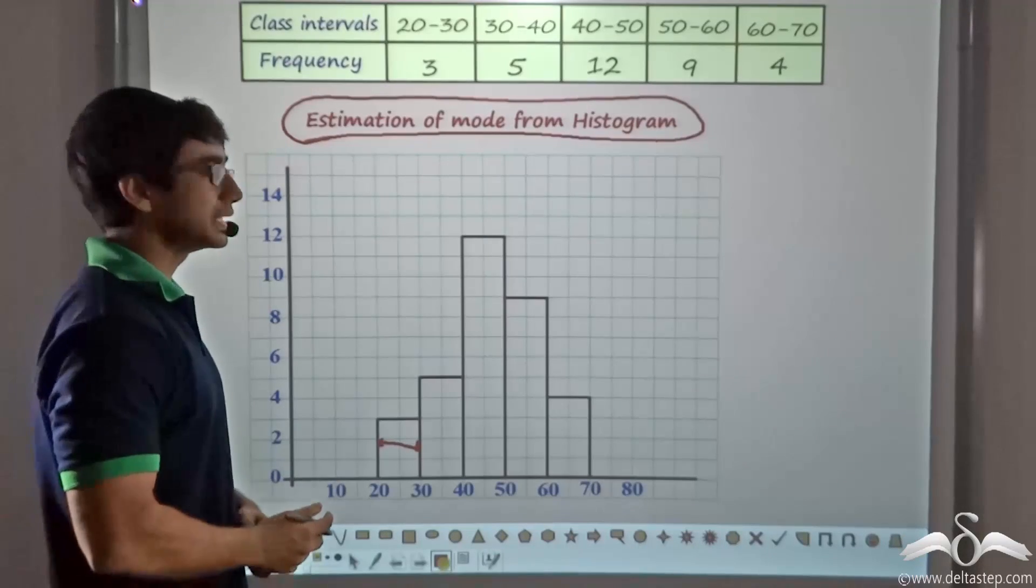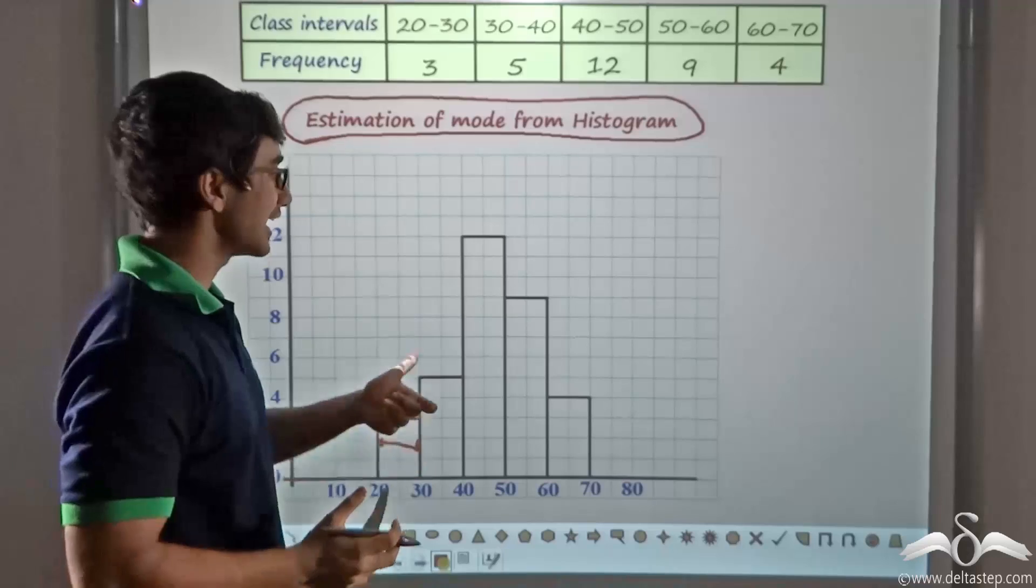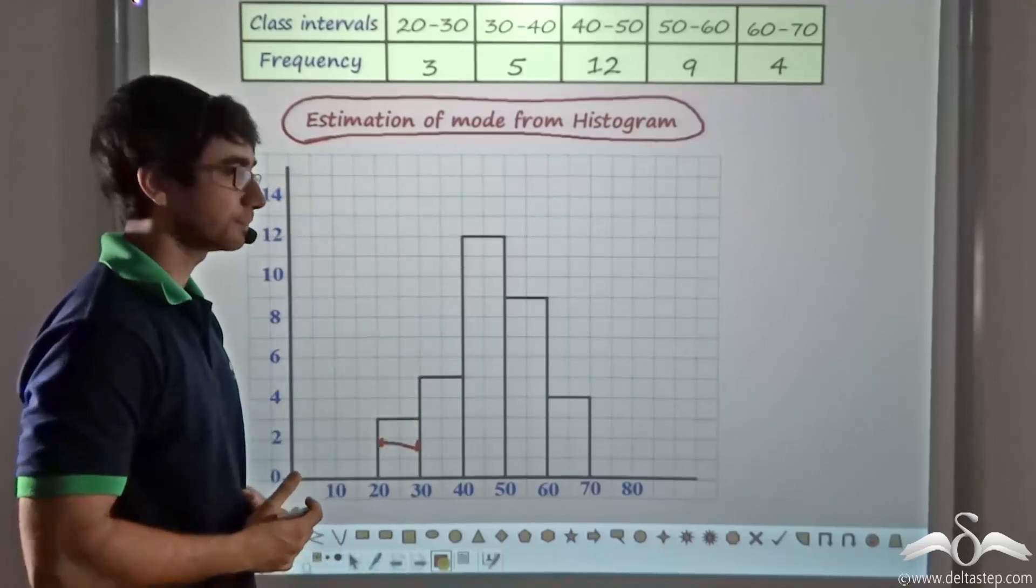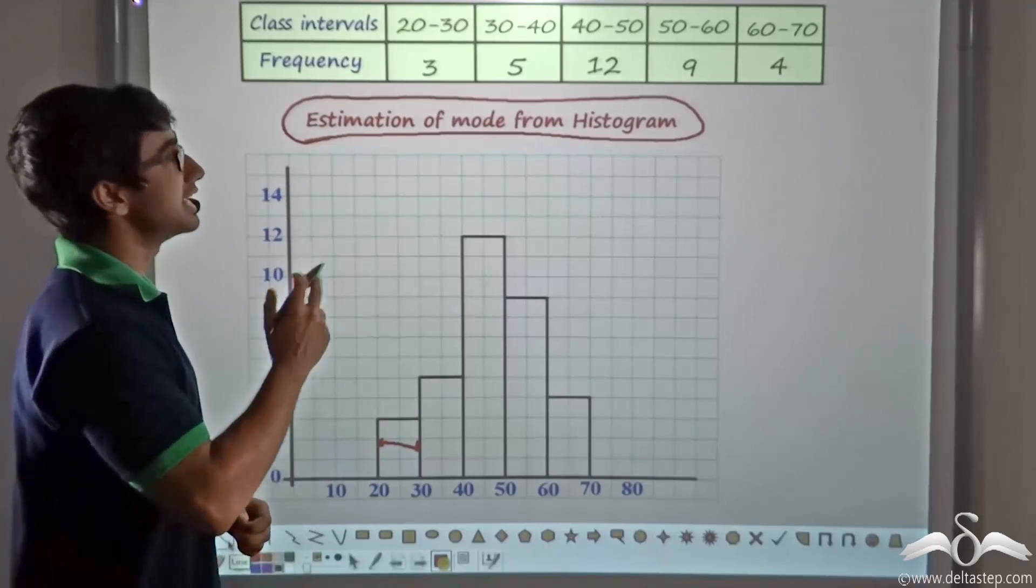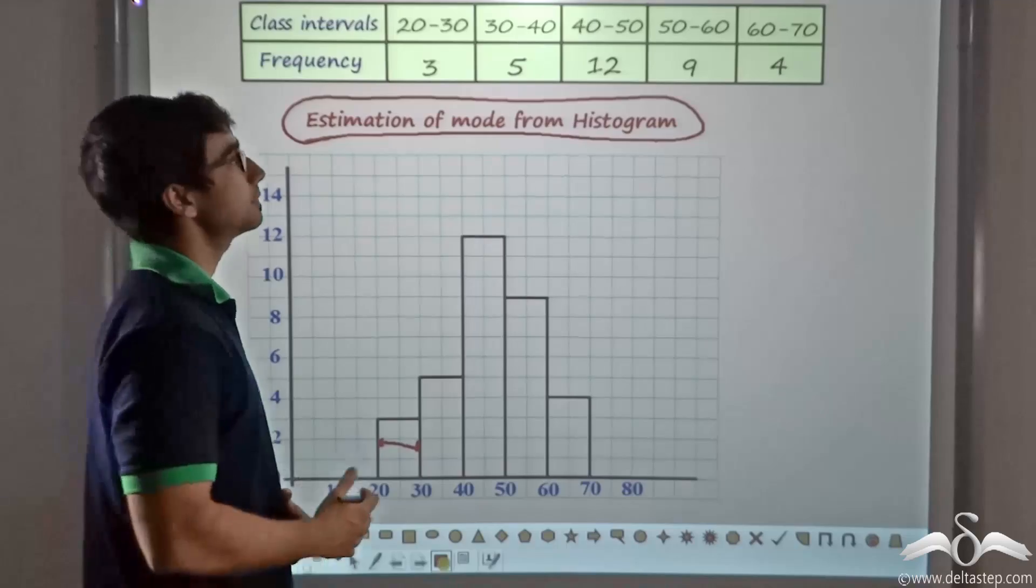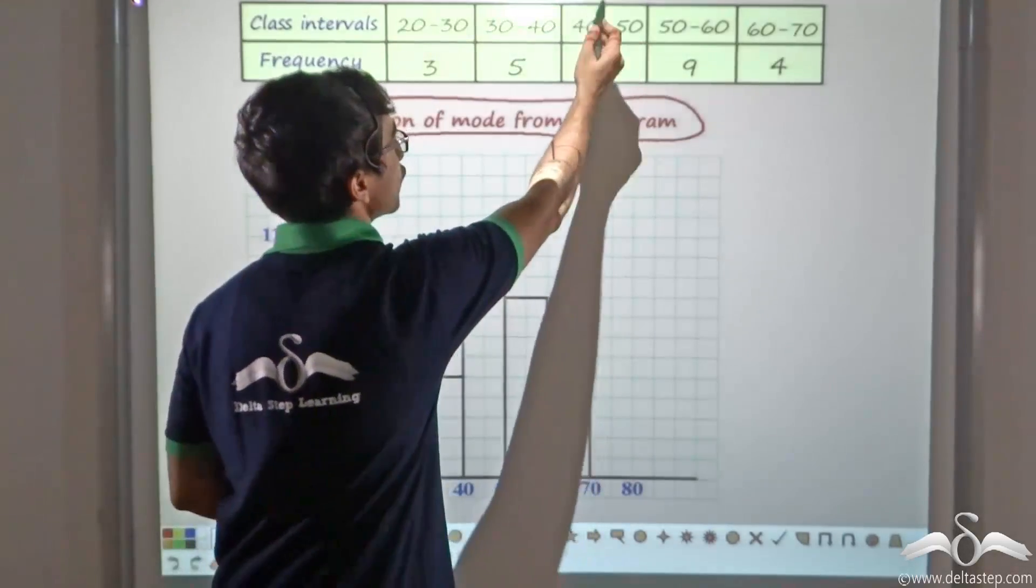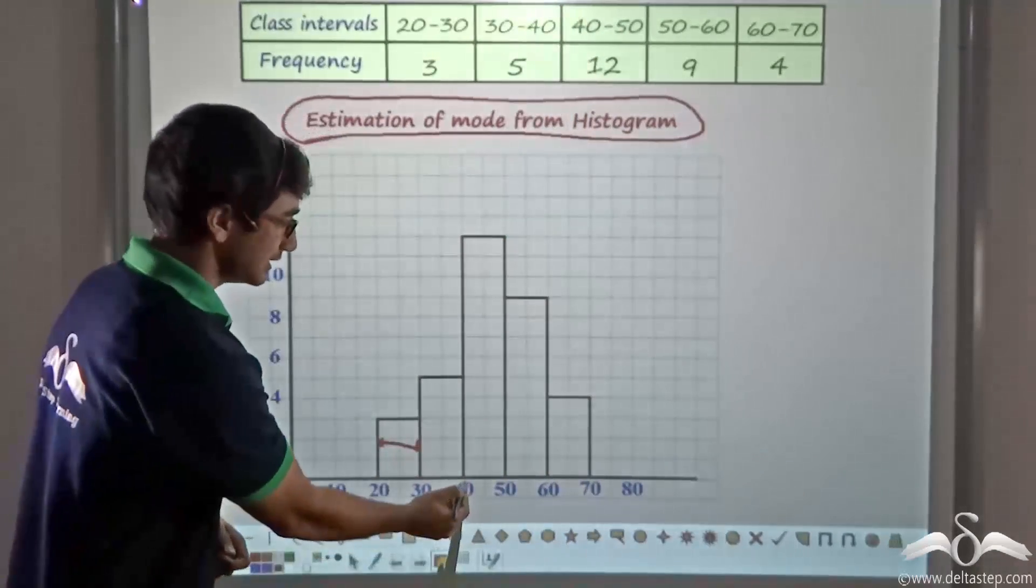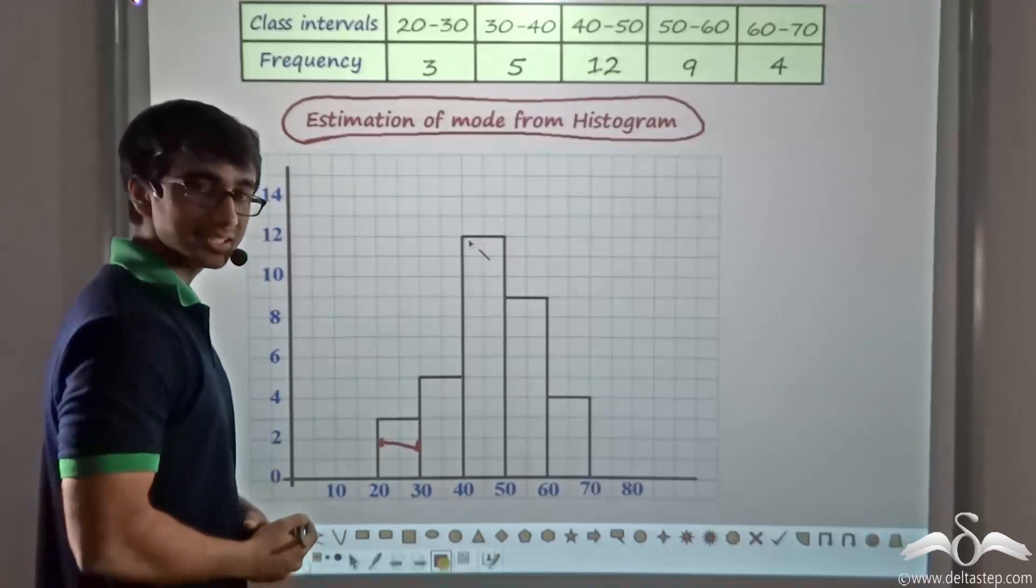Firstly, we have to find out which bar has the highest or greatest length. As you can see, the greatest length is possessed by the bar in the class interval 40 to 50. This particular bar has the greatest length.